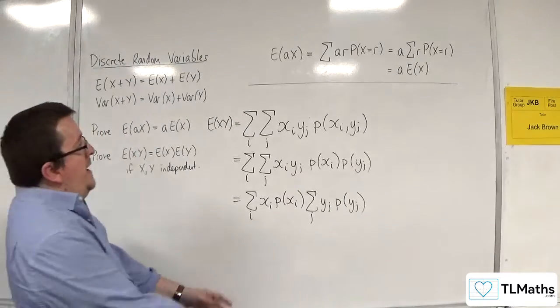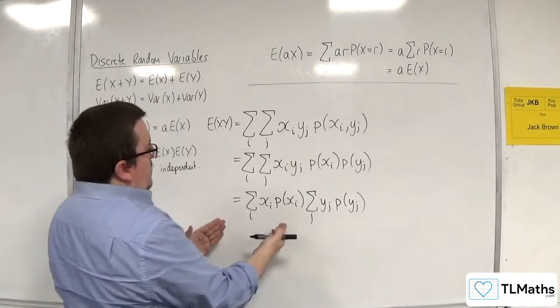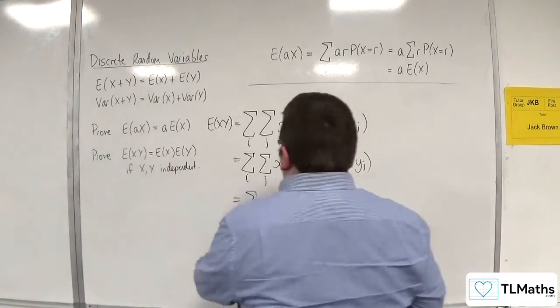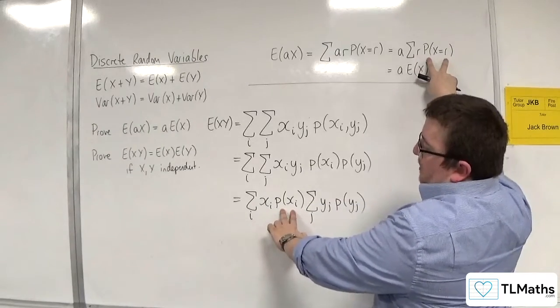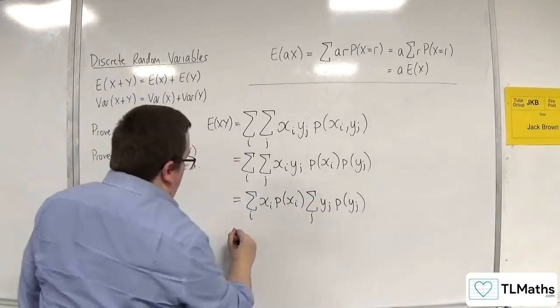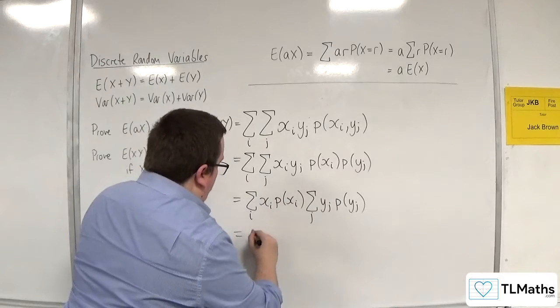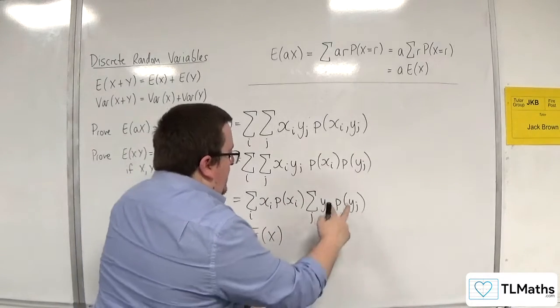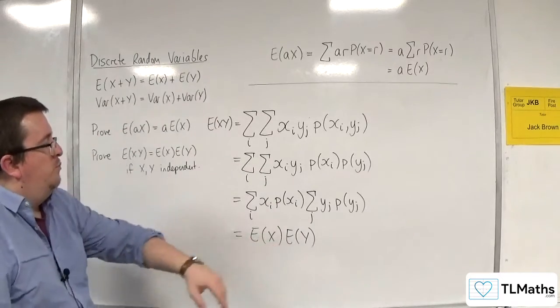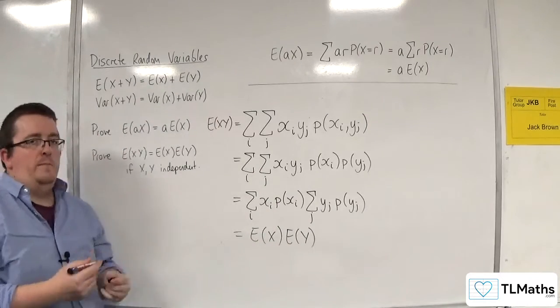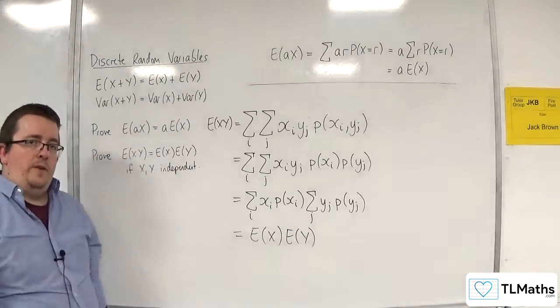And, of course, here, this is the probability of each of the xi's, the r's, times by their respective probabilities. This is E(X). And that is E(Y). And so, that is the proof that allows that statement to work that I used in the previous video.